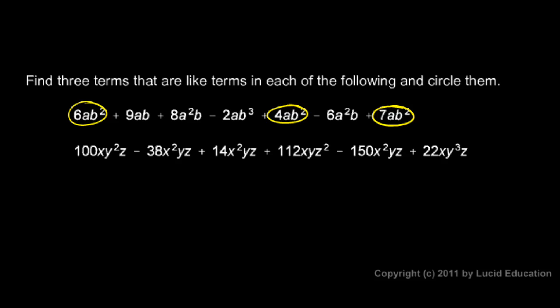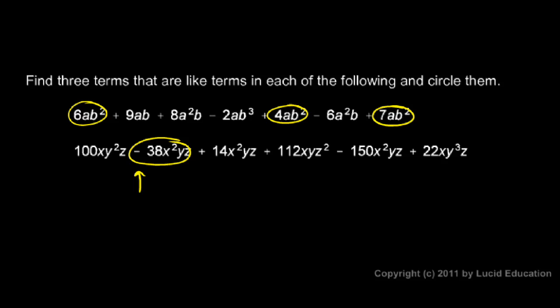And in the second one, here's an XY squared Z — no other XY squared Z terms. So let's look at this one: X squared YZ. There's an X squared YZ term, and there's another — the 14X squared YZ — and over here, the negative 150X squared YZ. So we found three like terms there. Let's circle those. The negative sign there is part of that term, and the negative sign here is part of that term, and the negative sign here is part of that term.